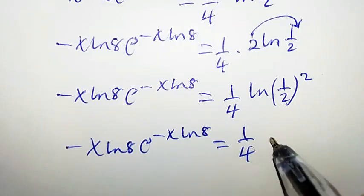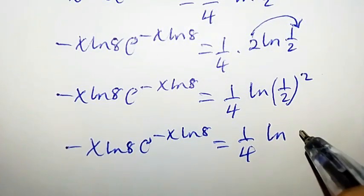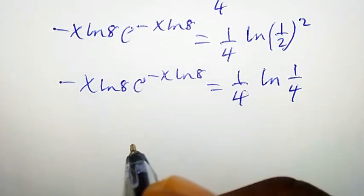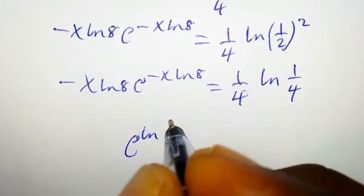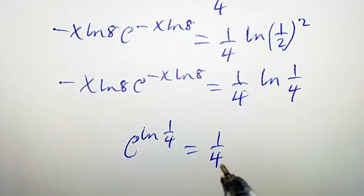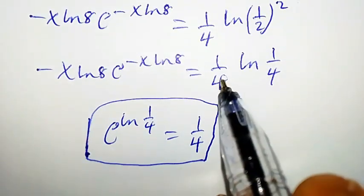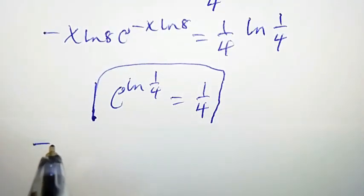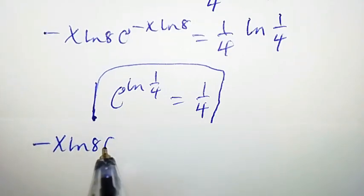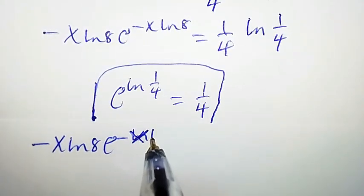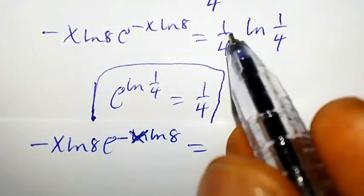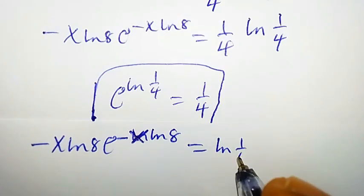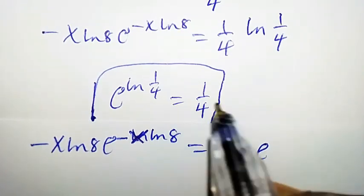Recalling that 1/4 can be written as e to the power of ln(1/4), we replace 1 over 4 with e^(ln(1/4)), so the right-hand side becomes ln(1/4) times e to the power of ln(1/4). This now matches the Lambert W function form a times e to the power of a.